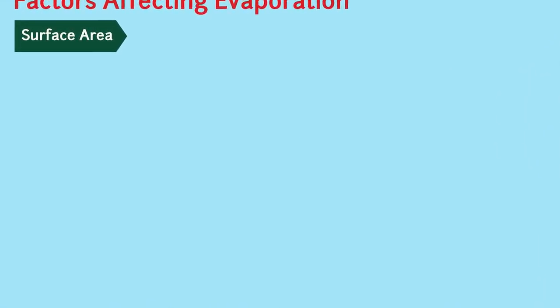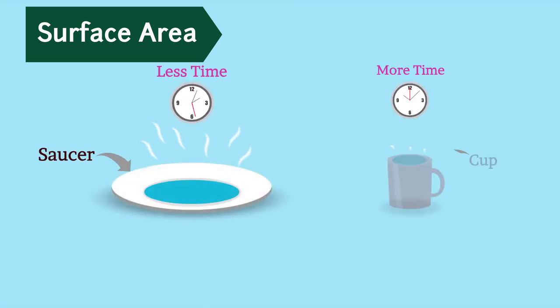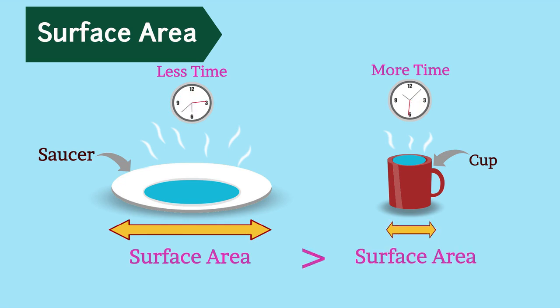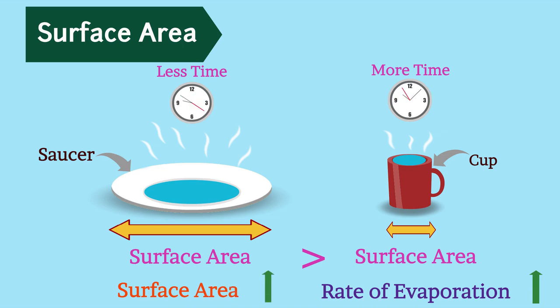Surface area. You must have noticed that water kept in saucer evaporates in less time than water present in cup. This is because the surface area of saucer is larger than that of cup. Therefore, it can be concluded that rate of evaporation increases when surface area increases and vice versa.